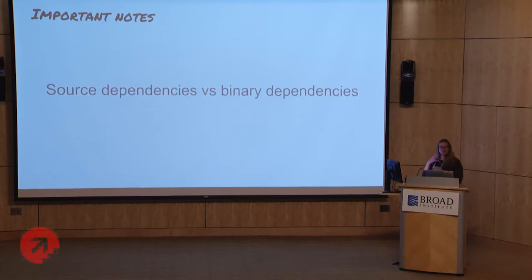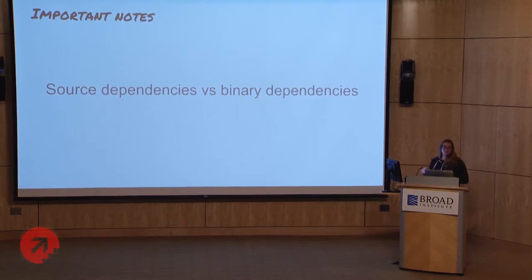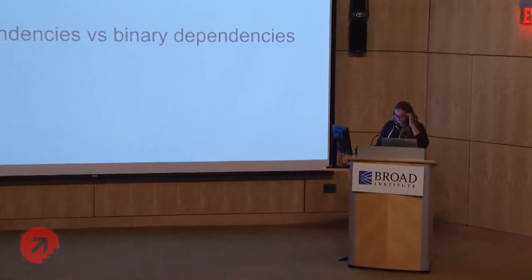A question I get a lot is: what are source dependencies and why do we care? With binary dependencies, all of your dependencies have to be versioned and compiled. With source dependencies, they don't. We don't care about versioning. Could you imagine having a monorepo where you had to actually compile everything and version everything and then depend on that? That would be a nightmare for everyone contributing to that monorepo.